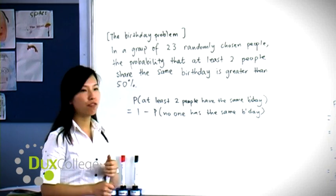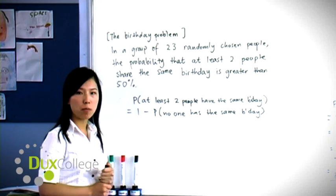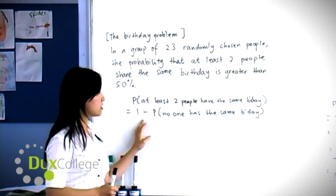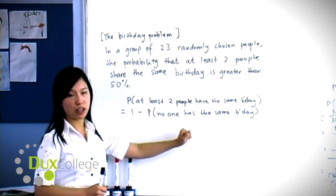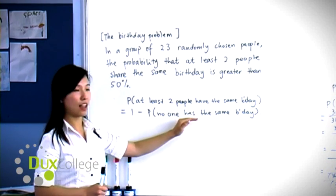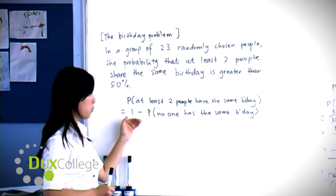However, if you're breaking this down by looking at the complementary events, then the complement of at least two people share the same birthday would be no one has the same birthday. So it would be one minus that.